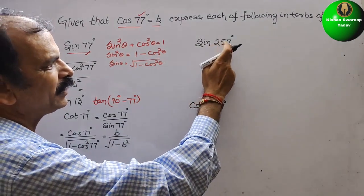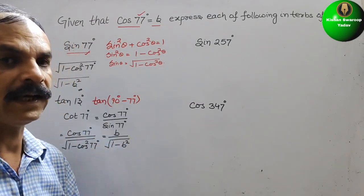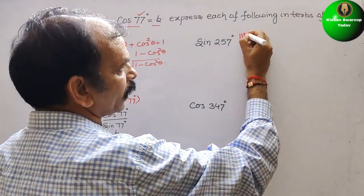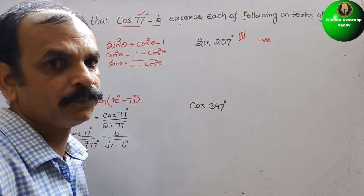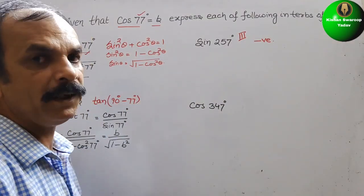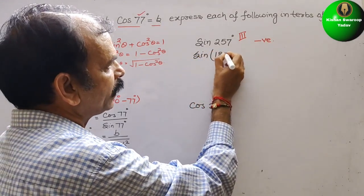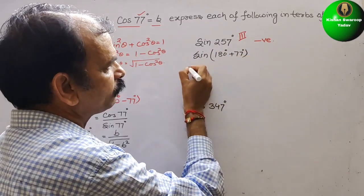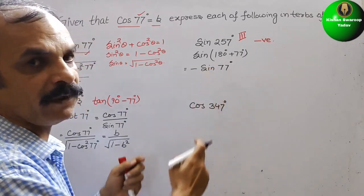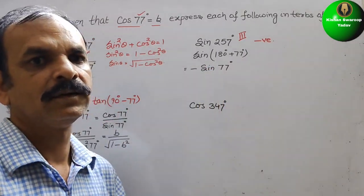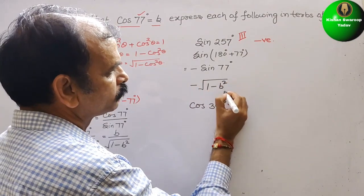Next: sin 257°. We check which quadrant 257° lies in — it lies in the third quadrant, where sin is negative. We write 257° = 180° + 77°, so sin(180° + 77°) = −sin 77°. Since sin 77° = √(1 − B²), the answer is −√(1 − B²).